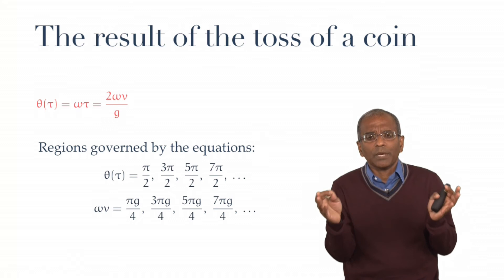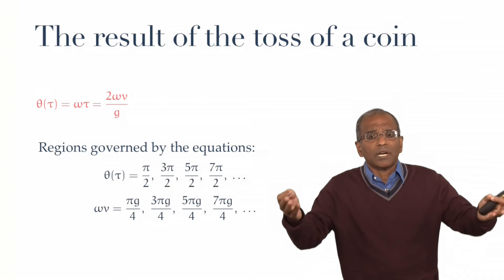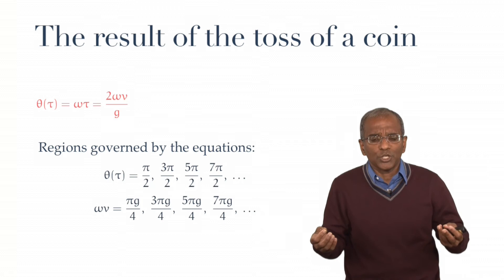Now, this is a beautiful deterministic picture. A coin toss then is going to give you something which is completely predictable. Where is there any room for randomness? Why do we imagine that a coin toss gives us heads half the time and tails half the time?